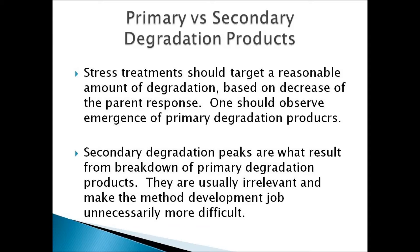A couple of other definitions pertinent to this field are primary and secondary degradation products. Primary degradation products are what you form when you degrade a sample — these are the emerging degradation products, and it's the type you want to create in your sample from stress treatment. Secondary degradation peaks result from breakdown of primary degradation products, and typically they're irrelevant and make the method development job unnecessarily more difficult.